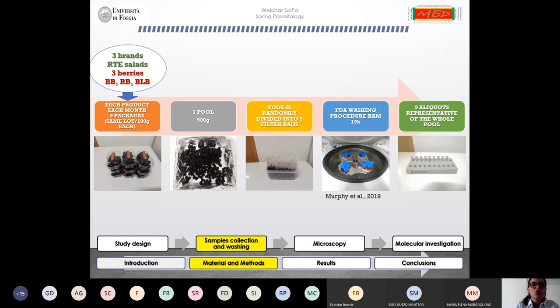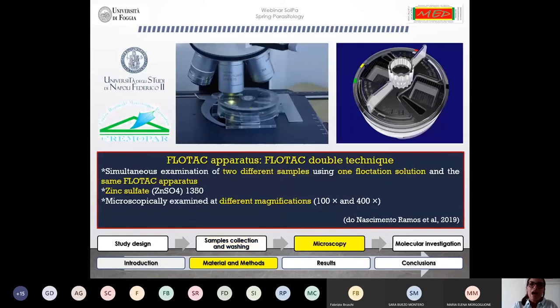Each package of products belonging to the same lot weighed at least 100 grams each. Therefore, we obtained one pool of 900 grams that was then randomly divided into nine filter bags and processed according to the FDA washing procedure BAM 19B. At the end of this process, we managed to obtain nine aliquots which were representative of the whole pool.